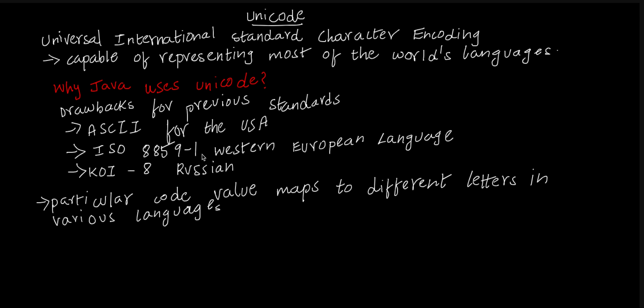ISO 8859-1 is a standard used for Western European language, and KOI-8 is used for representing Russian language characters. Various standards for representing local language characters faced problems.